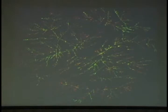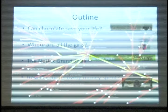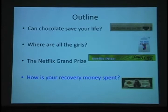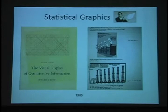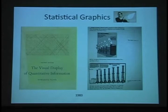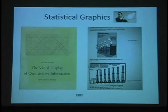My last topic is called How Is Your Recovery Money Spent? — but it's really my segue into statistical graphics. This was another lucky thing — this guy is one of my heroes: Edward Tufte. He wrote a book in 1983 called The Visual Display of Quantitative Information — the first ever coffee table book for statistics. It has beautiful pictures and drew attention to the fact that there are good ways and bad ways to display data, making this a field of study for us.